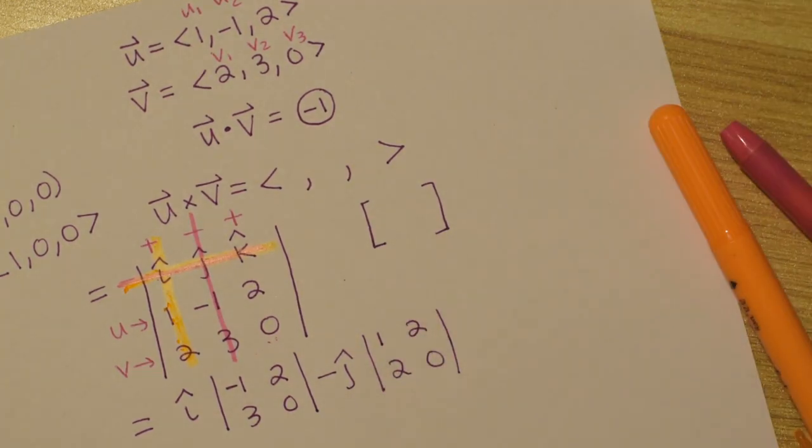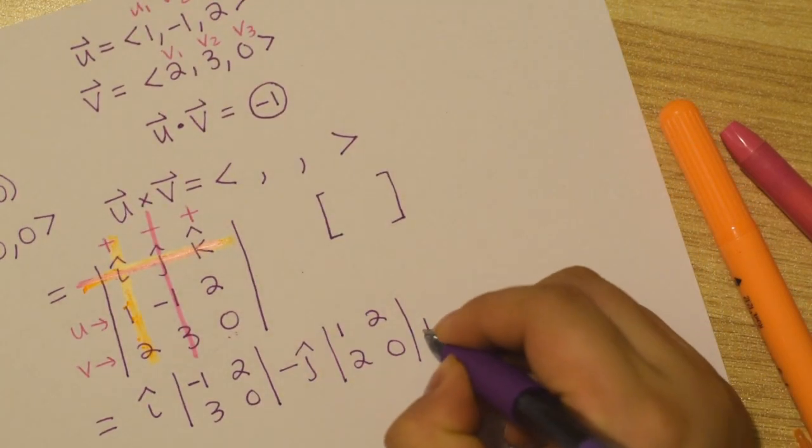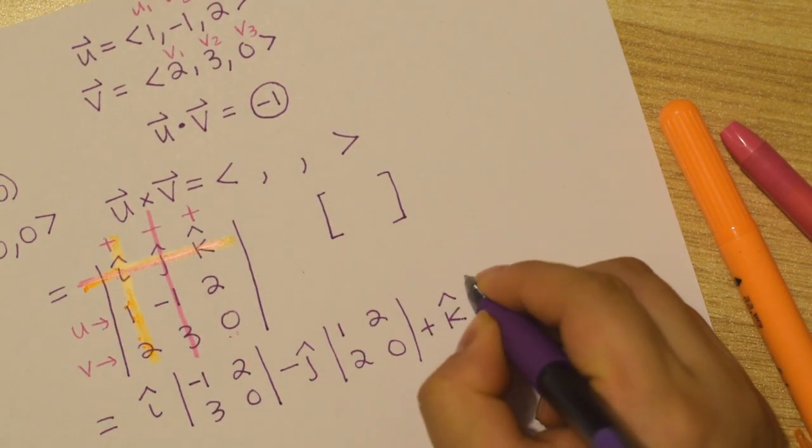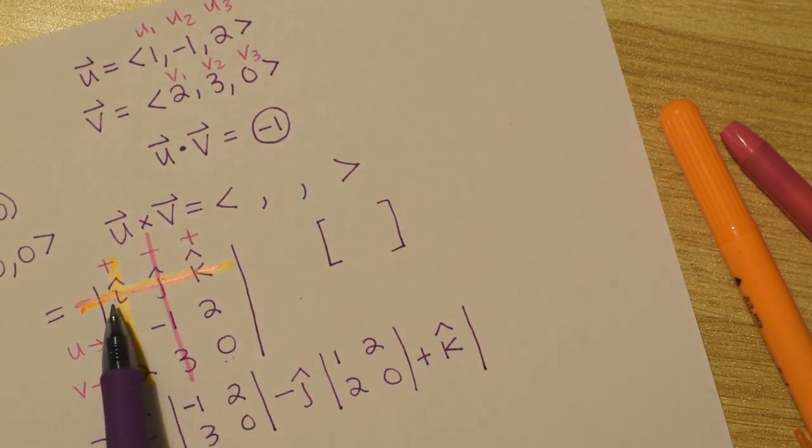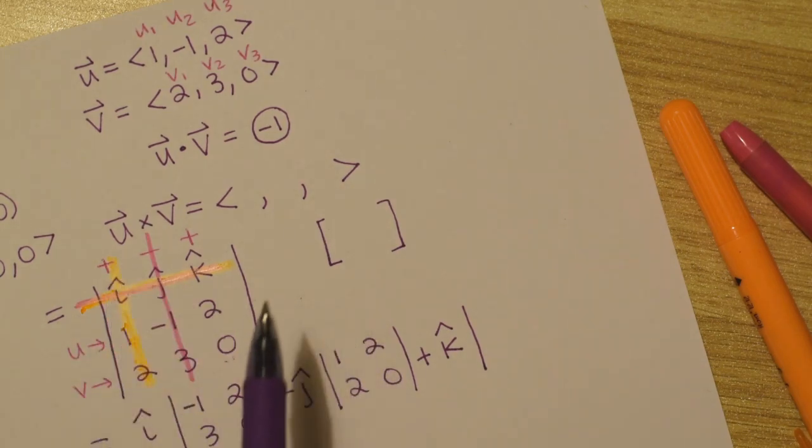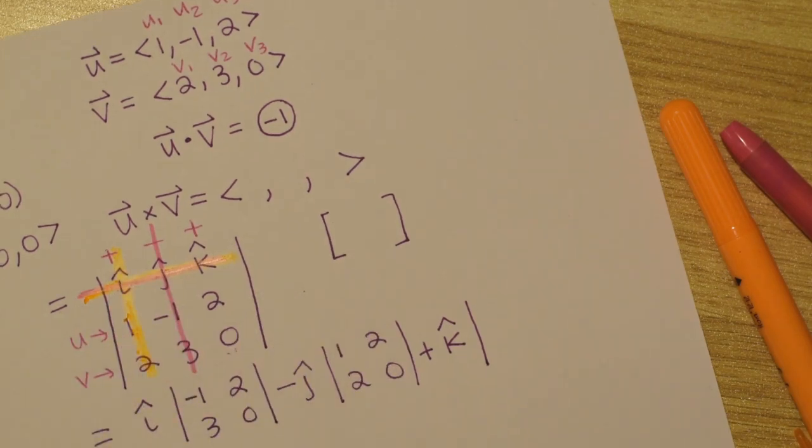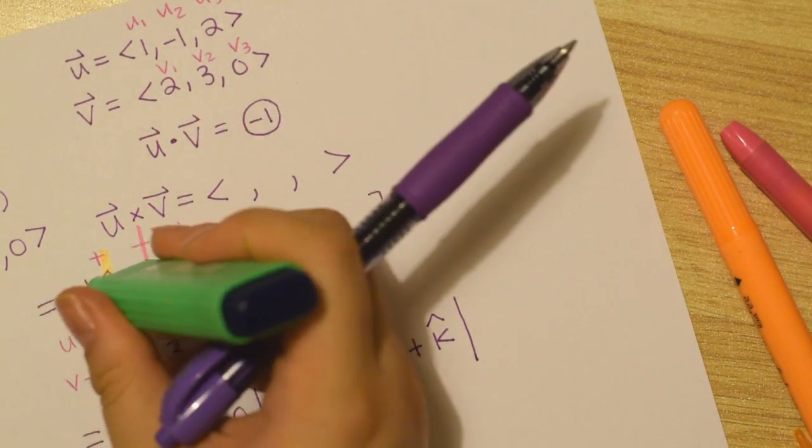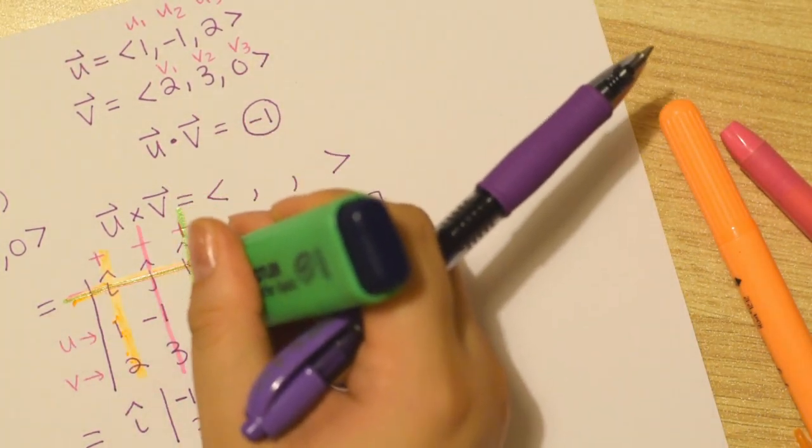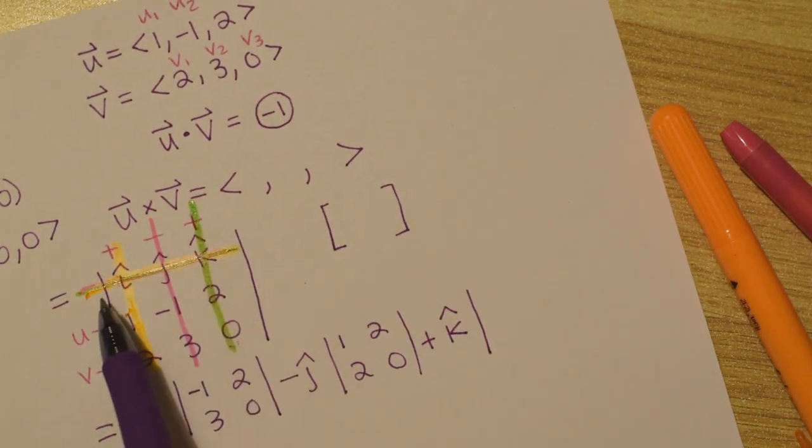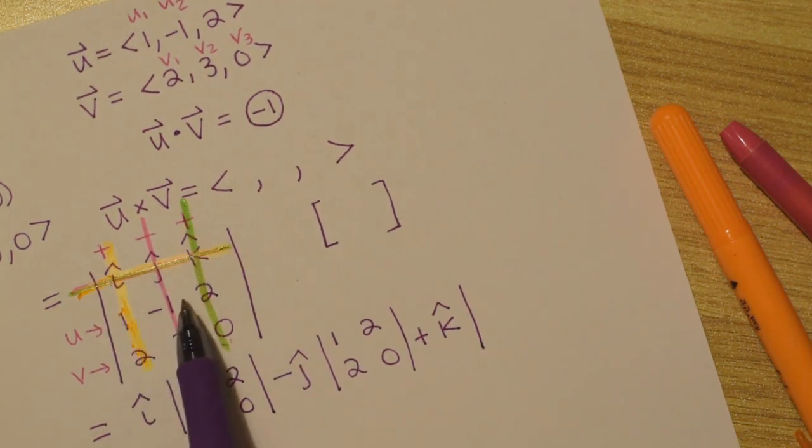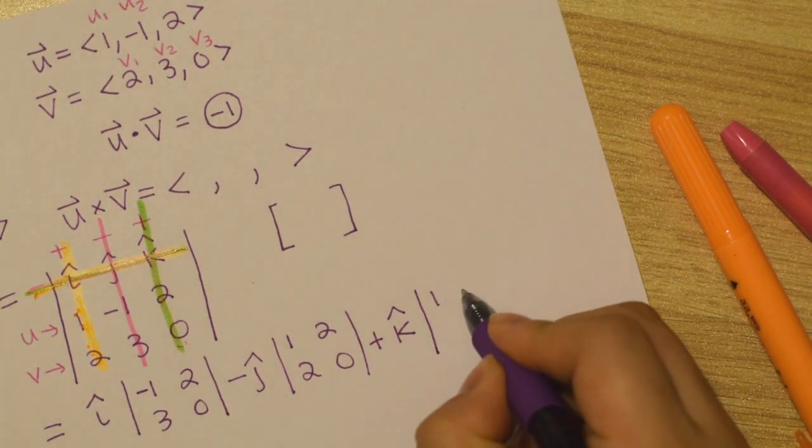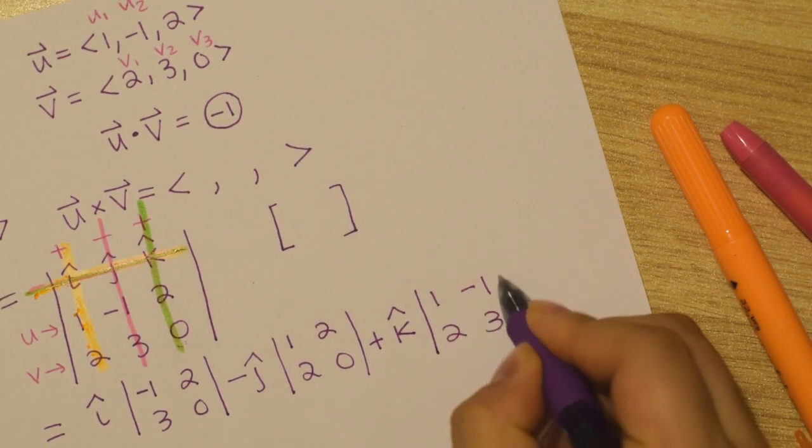And then same thing for k. We have a plus k. So it seems like a lot right now, but it'll just, with practice, you just do i, j, k, u, v, v, go. Done. So, but take your time here so we have our k. Cross out the same row. Cross out the same column. And we're left with the only thing not green. 1, negative 1, 2, 3. Like so.